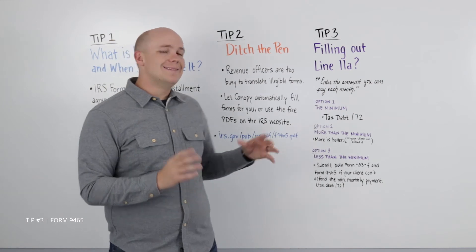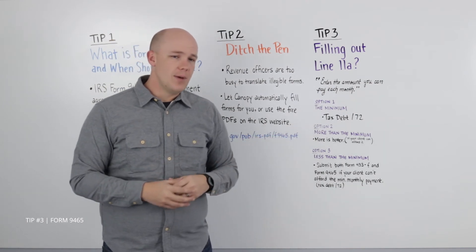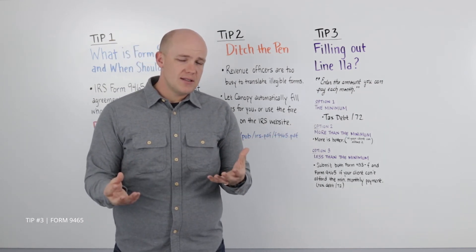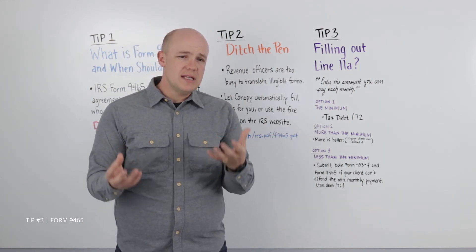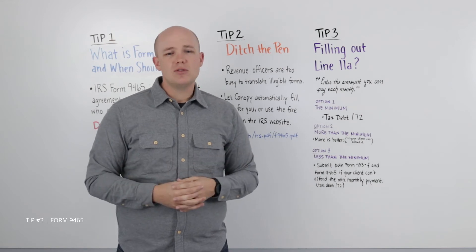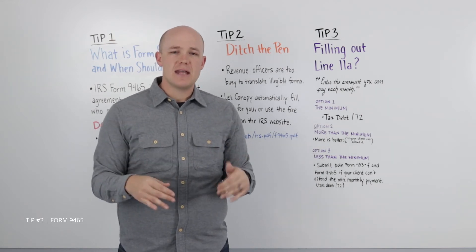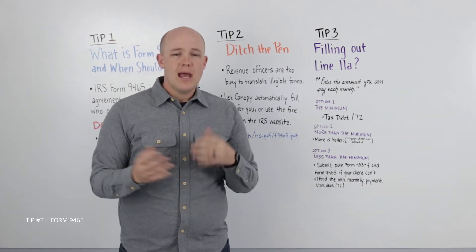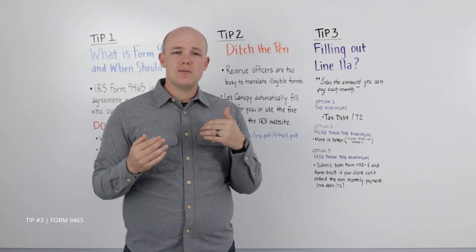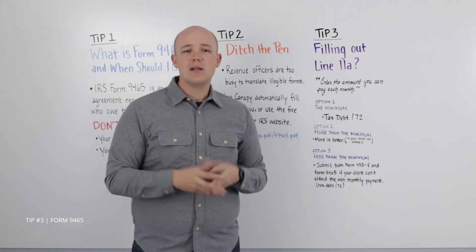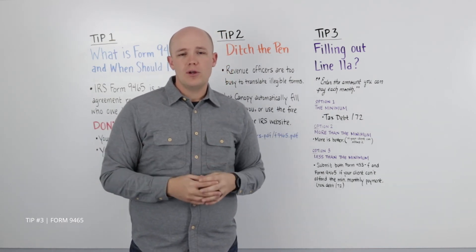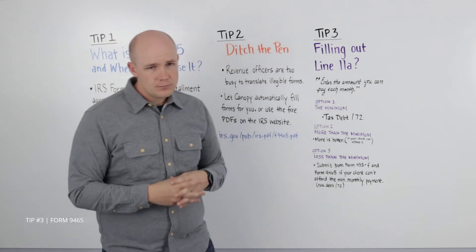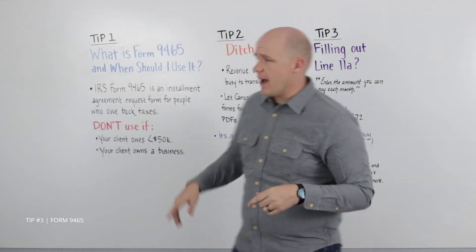Option number three: less than the minimum. It's not ideal, but the IRS will still grant an installment agreement even if the most your client can pay is less than their debt divided by 72. However, you will need to submit a collections information statement, Form 433-F, along with the 9465.